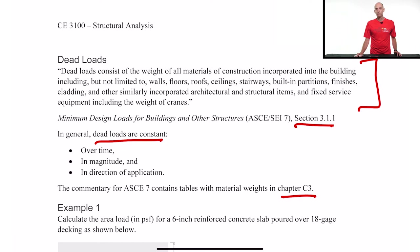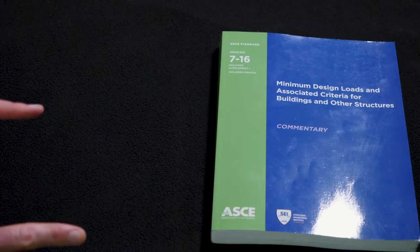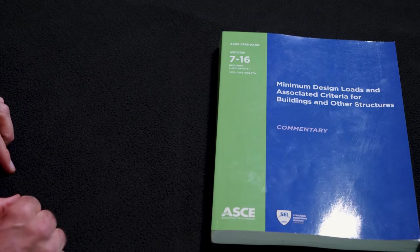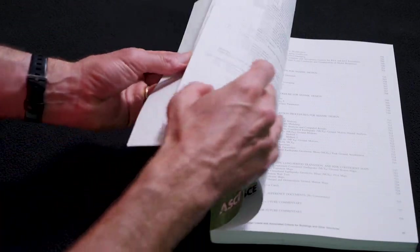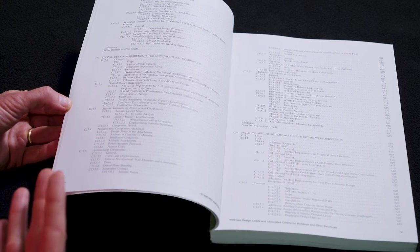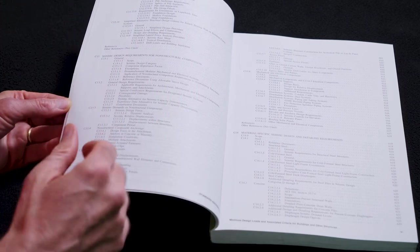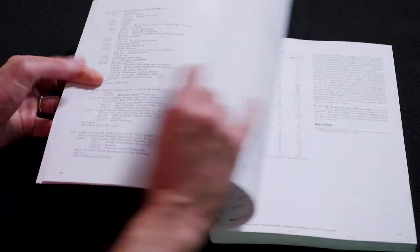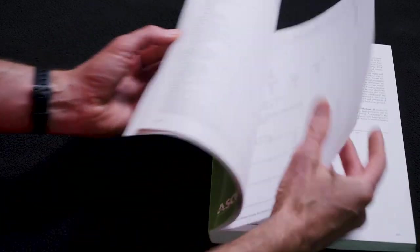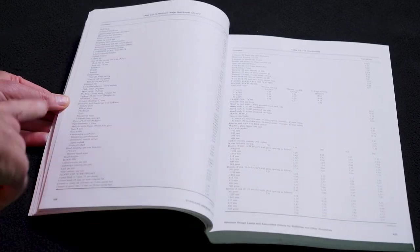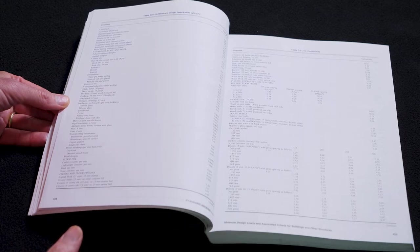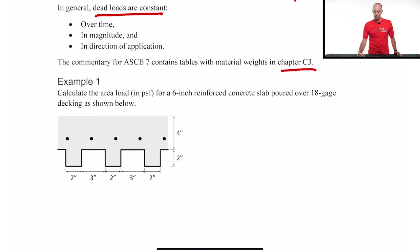There's a handy table in the commentary of ASCE 7 — make sure you are using the commentary, not just the provisions. They have a chapter corresponding to each provisions chapter. We're going to go to chapter C3, since that's where dead loads are contained. You can see they have lots of tables for all the different types of building materials you might run into, where you can figure out how much they weigh.